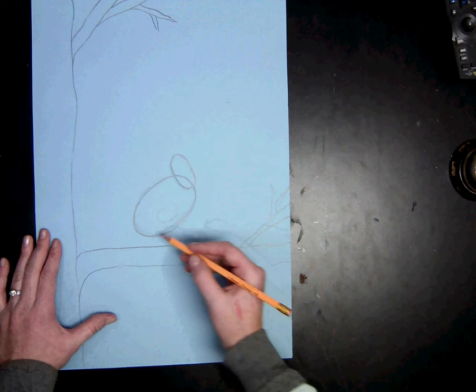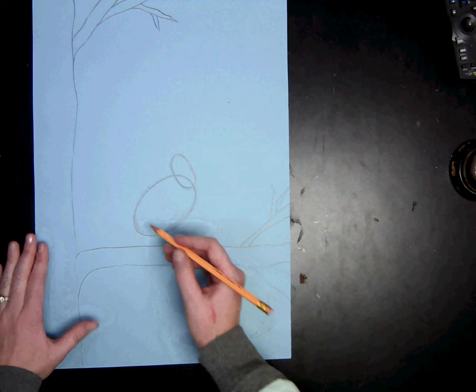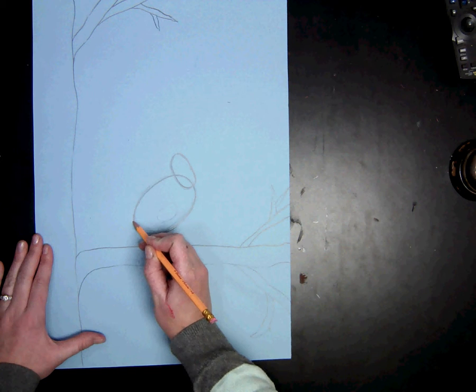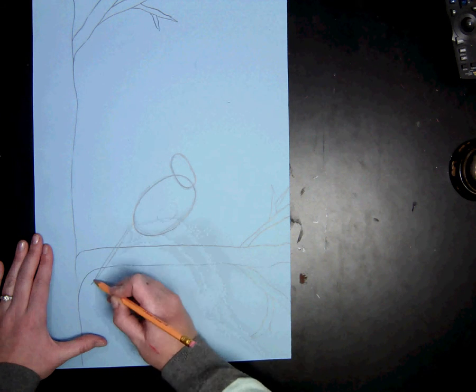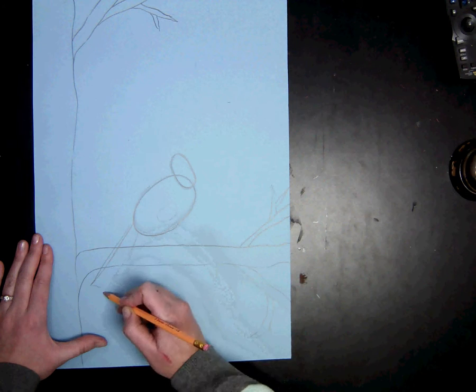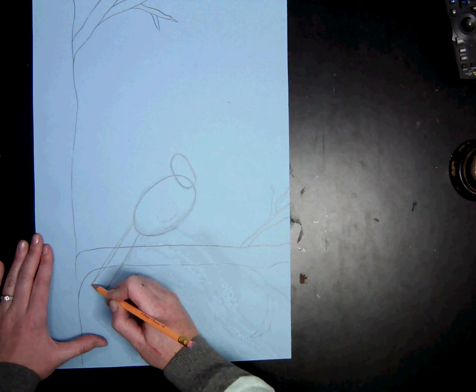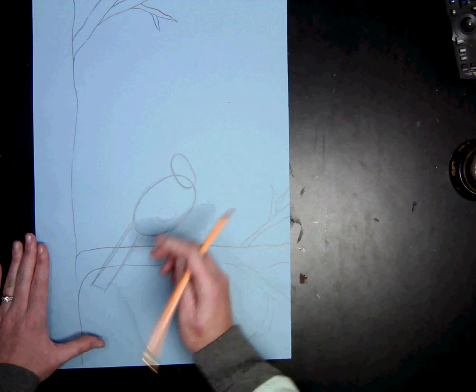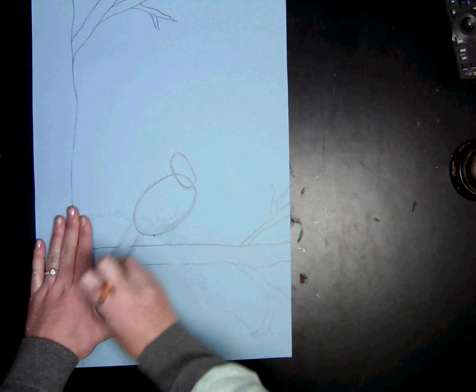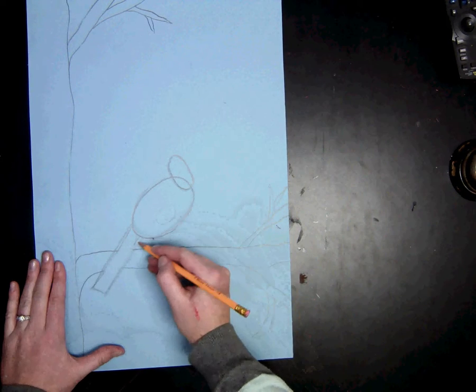Then I'm going to go ahead and I'm going to do my tail. And this I'm going to go over the branch. It's a pretty long tail. Go right over the branch, and it is a rectangle. Then I'm going to erase the tree line so it looks like the cardinal is in front.